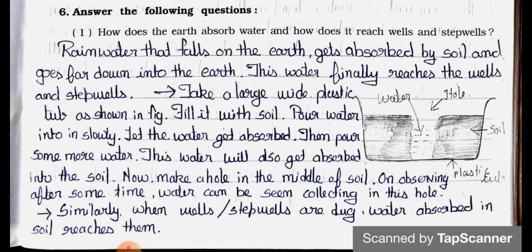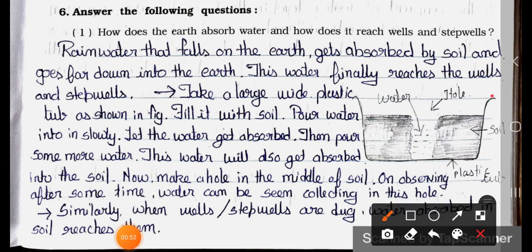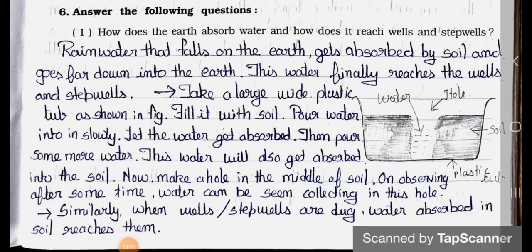Next, take a large wide plastic tub as shown in the figure — a figure is given here, draw it and understand with its help. Fill it with soil. Pour water into it slowly. Let the water get absorbed, then pour some more water. This water will also get absorbed into the soil. Now make a hole in the middle of the soil. On observing after some time, water can be seen collecting in this hole. Similarly, when wells or step wells are dug, water absorbed in the soil reaches them.